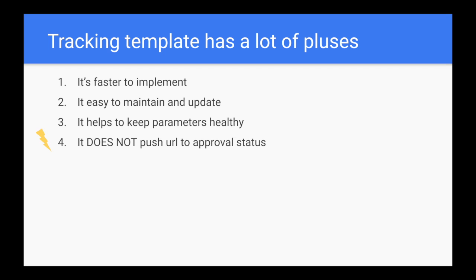You can set up different tracking templates for different campaigns. It's faster to implement than actually putting UTM params in every URL. It's easy to maintain and update because you set it up only once on a campaign or account level. If something changes, it automatically changes in all campaigns. It helps keep parameters consistent, so you don't have different standards in different places, and you only type it in once.